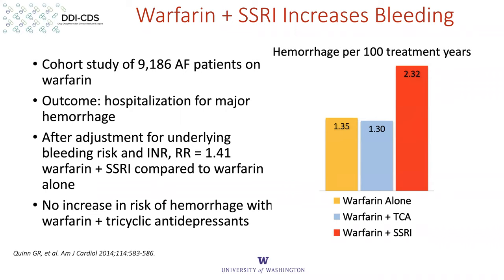This was a cohort study of patients with atrial fibrillation on warfarin where the outcome was hospitalization for major hemorrhage. After adjusting for underlying risk and INR, the relative risk was 1.41 with warfarin and SSRIs compared to warfarin alone. Interestingly, there was no increase in risk with warfarin plus tricyclics — tricyclics do not have the same effect on platelet serotonin. The graph shows warfarin alone and warfarin with tricyclics at roughly the same rate, with warfarin plus SSRIs showing roughly a doubling.